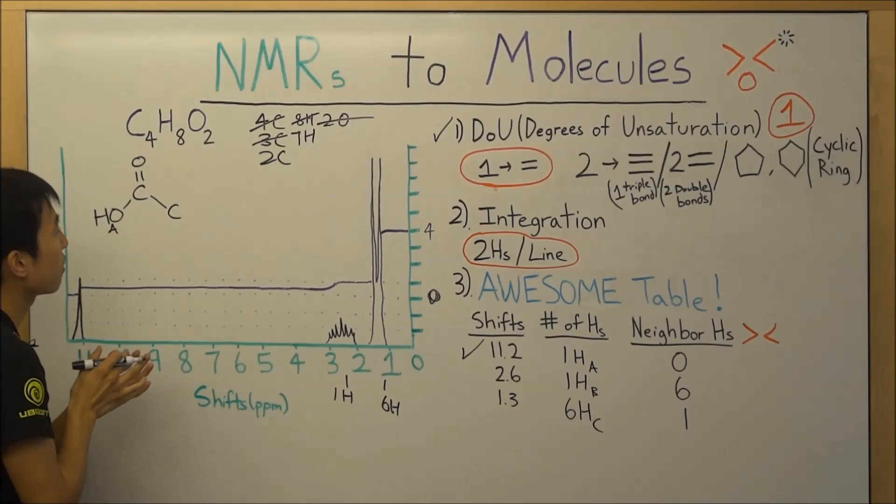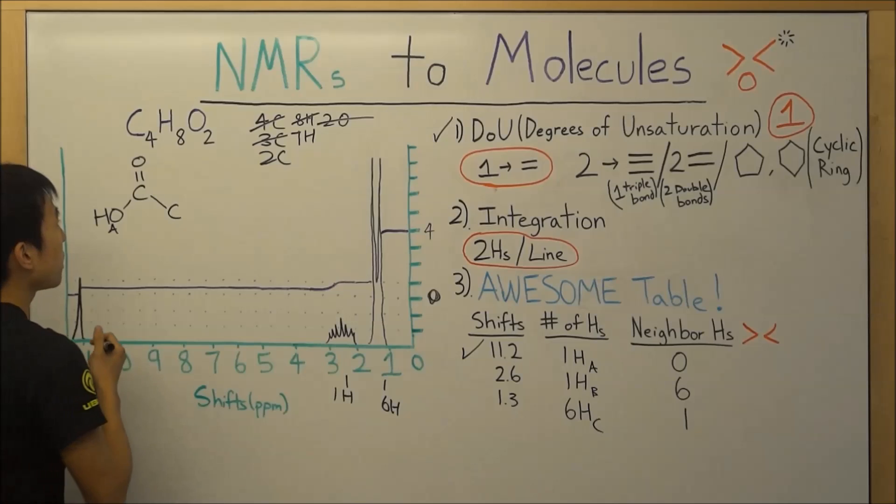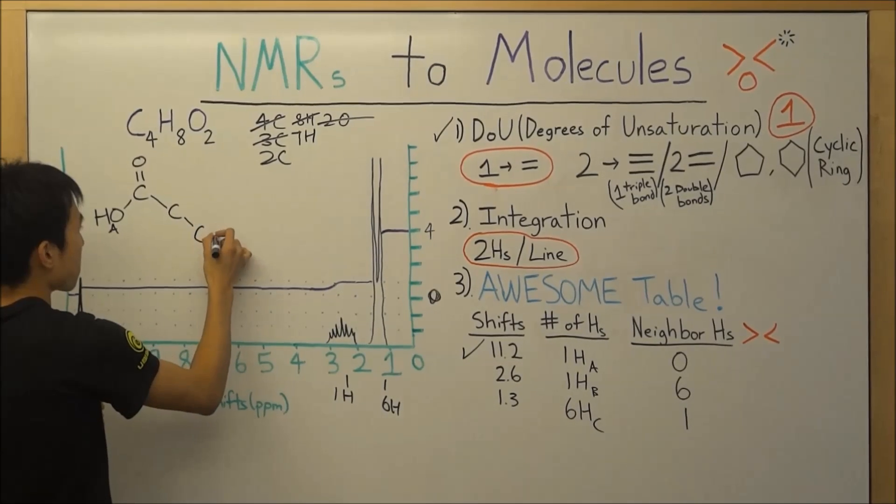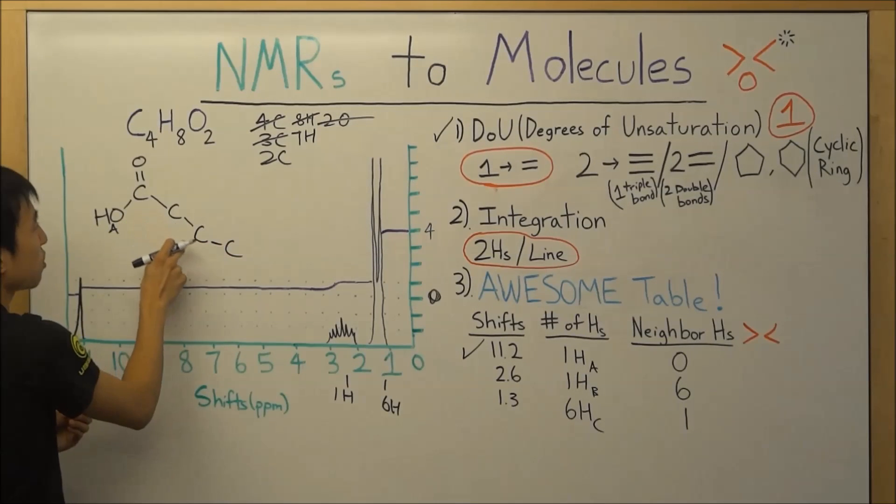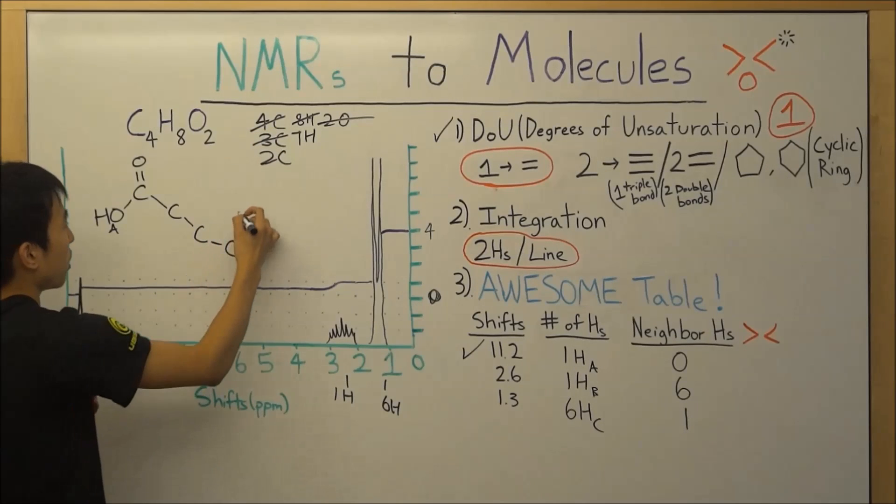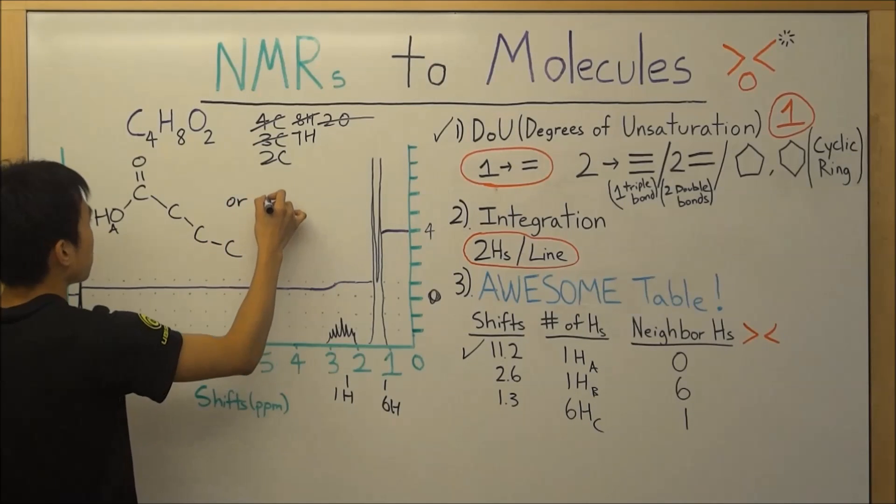So we basically have two options over here. We can either extend this carbon and have another carbon over here, and we'll have one, two, three, four carbons and fulfill everything.